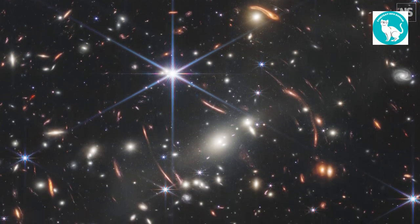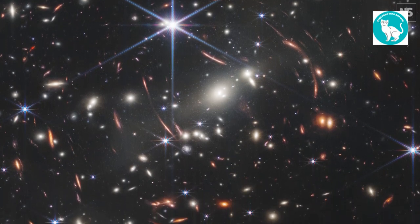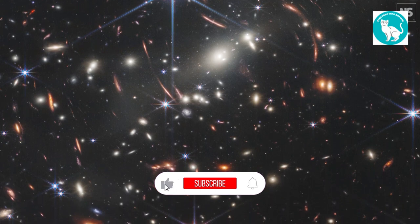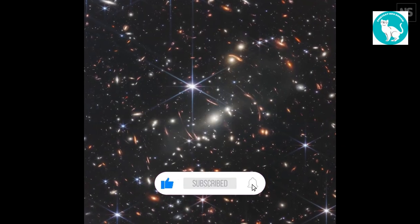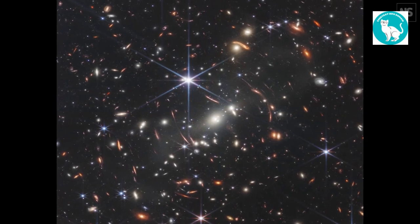SMAC 0723, Webb's First Deep Field of the Galaxy Cluster. This image shows a small speck of space the size of a grain of sand held out at arm's length, teeming with millions of galaxies, including the weakest objects yet detected in infrared light.